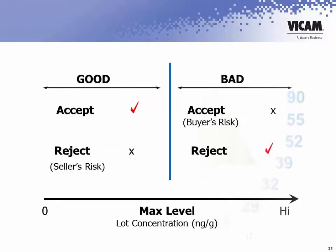So the situation is: if the blue line in this slide represents the level at which both the buyer and the seller agree is the maximum permitted level — if you have what is genuinely a good sample, that is, the overall level of contamination is below the maximum level, that would normally be accepted. There is a risk with these analyses: in the case that you get one of those samples that yields a value higher than the actual mean value of the lot, then that lot would be rejected. So that would be the seller's risk — the risk of a false positive test.